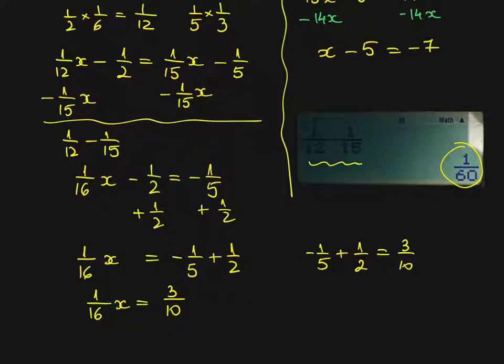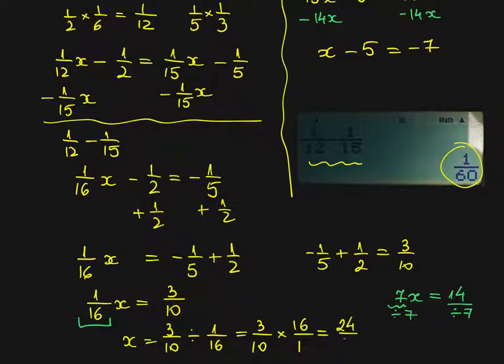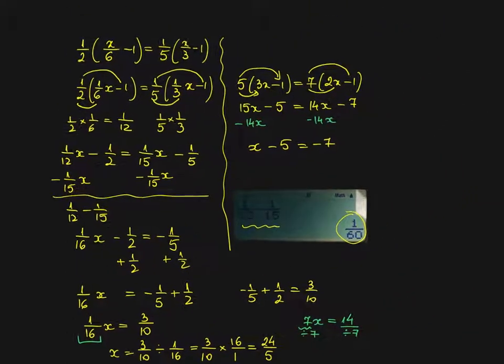How do I get x? Remember a simpler equation could be, for example, 7x equals 14. How do you get x? You divide by 7 both sides. Here I will divide by 1 over 60 both sides. So I get x equals 3 over 10 divided by 1 over 60. Which you can do with a calculator. 3 over 10 times 60 over 1, which gives me 24 over 5 by calculator.